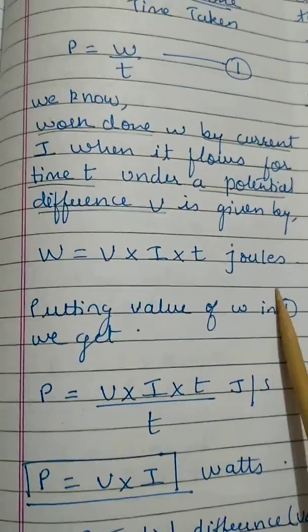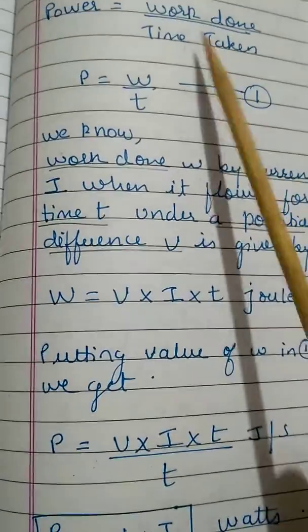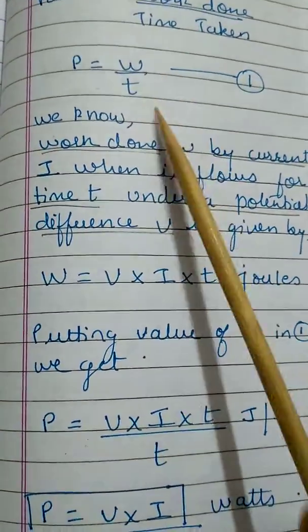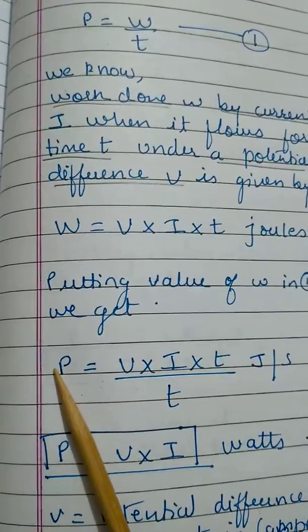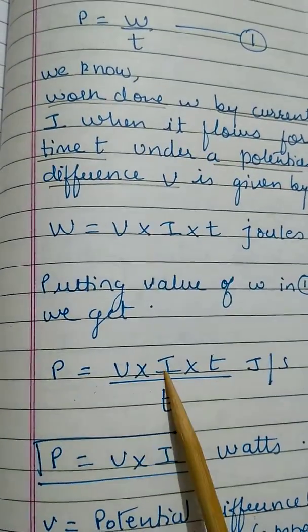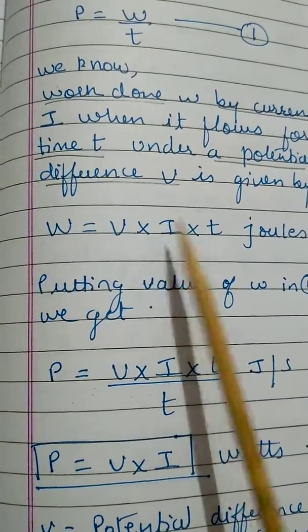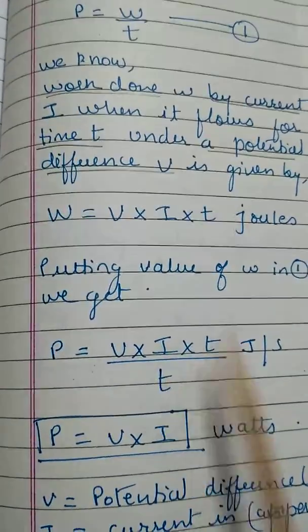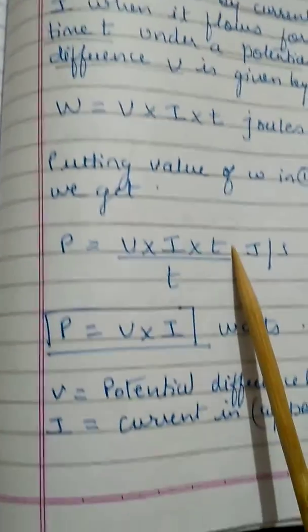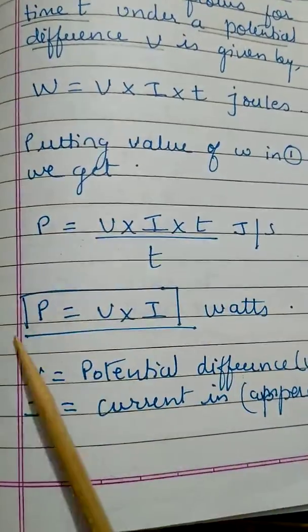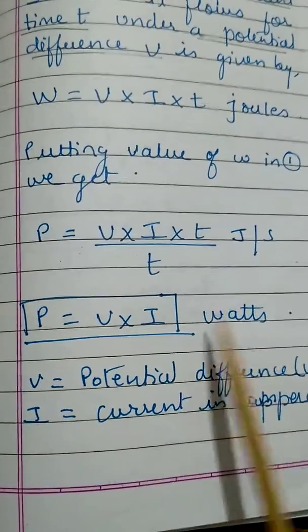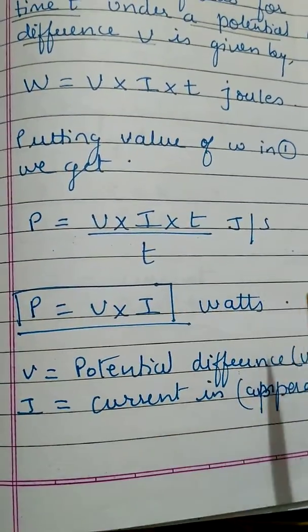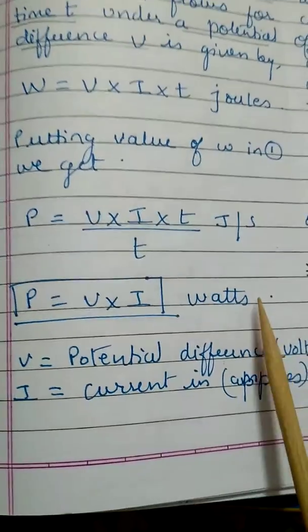Now putting the value of W into equation one — power equals W upon T — we get: power equals V×I×T upon T. The T gets cancelled, so P equals V into I watts. The unit of power is watt.